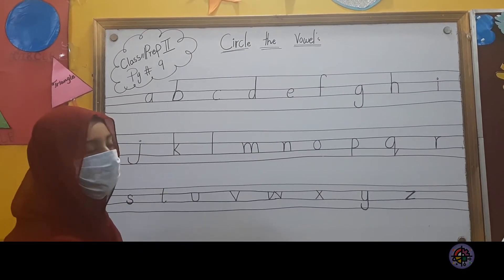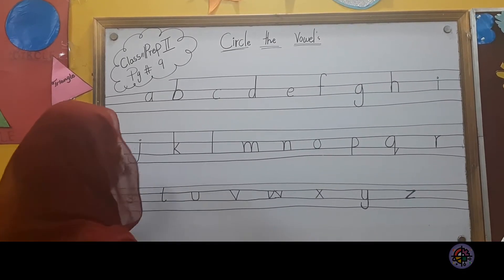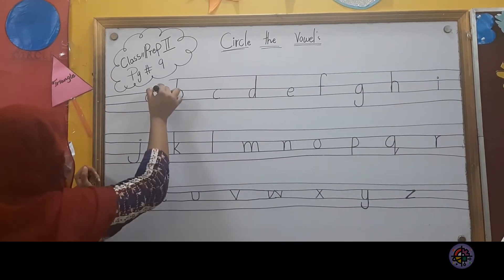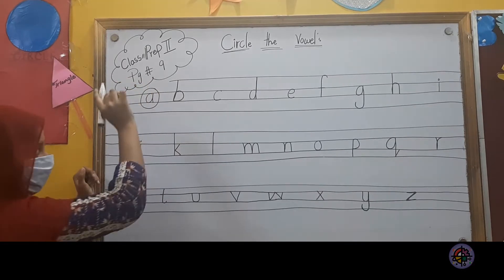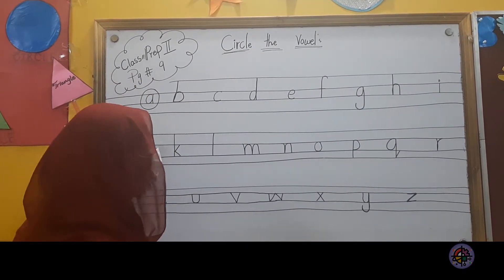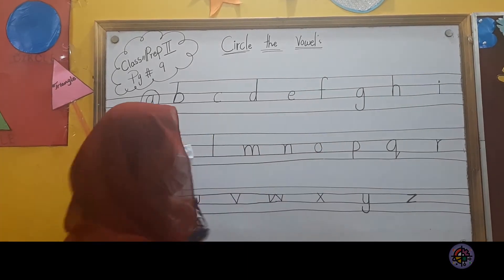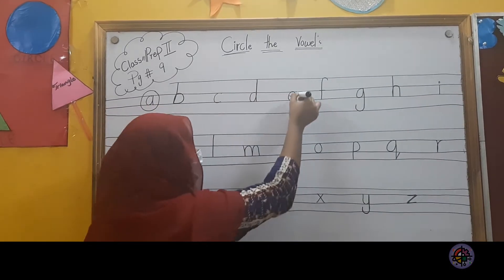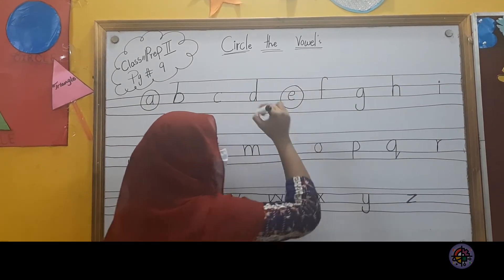We will tell you the first vowel — what do we read? A. So we will tell you where A is — first. We will circle that. The vowels are A and E. Now we will check where E is. The E is here. So we will circle here in our column.